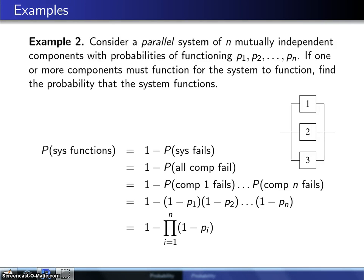Now just as series systems are the worst possible arrangement, it turns out that parallel systems are the best possible arrangement of N mutually independent components.